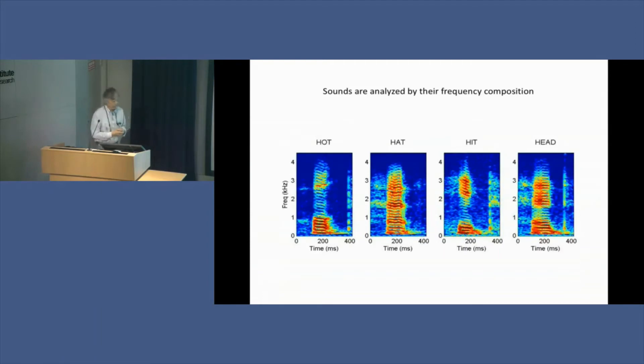Here are four spectrograms. On the vertical axis is frequency, on the horizontal axis is time. These are the vowel sounds like 'off' or 'hot,' 'after,' 'hat,' 'if' or 'hit,' 'ever,' 'head.' You can see that most of this energy is between one and four thousand cycles per second.